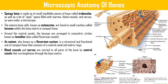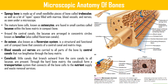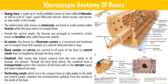In compact bone, the lacunae are arranged in concentric circles known as lamellae around the central canal, also called Haversian canals. An osteon, also known as a Haversian system, is the structural and functional unit of compact bone, consisting of a central canal and matrix rings. Blood vessels and nerves are carried to all parts of bone by central canals that run lengthwise through the bony matrix. Canaliculi are lateral canals that branch outward from the core canal to all lacunae.